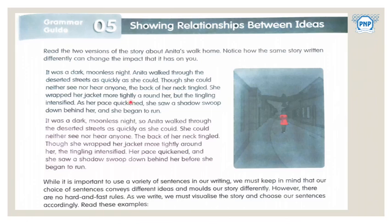The second version: It was a dark moonless night, so Anita walked through the deserted streets as quickly as she could. She could neither see nor hear anyone. The back of her neck tingled. Though she wrapped her jacket more tightly around her, the tingling intensified. Her pace quickened and she saw a shadow swoop behind her before she began to run.